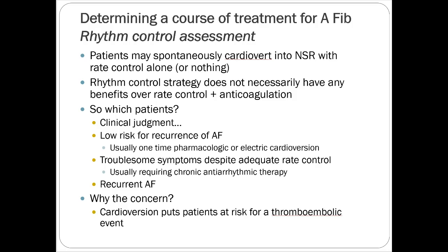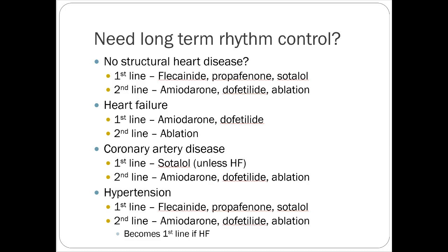The choice between rhythm control, rate control, and anticoagulation comes down to clinical judgment and how the patient is doing. Low risk for recurrent AFib usually warrants a one-time cardioversion — electrical or pharmacological. Troublesome symptoms despite adequate rate control usually require chronic antiarrhythmic therapy. Recurrent atrial fibrillation is another candidate for rhythm control. Cardioversion puts patients at risk for a thromboembolic event, so we need to make sure all our bases are covered.